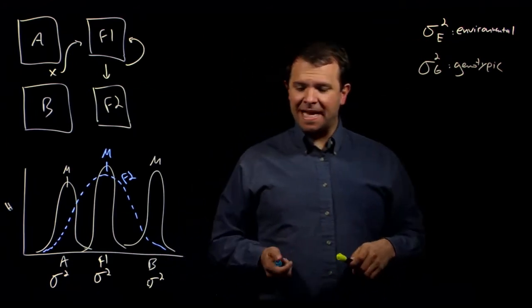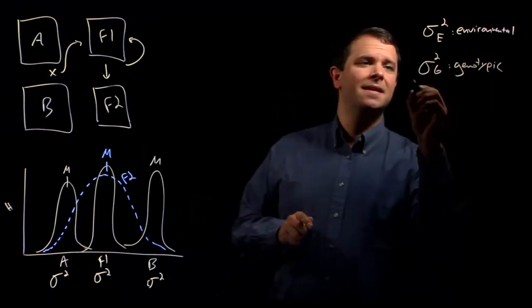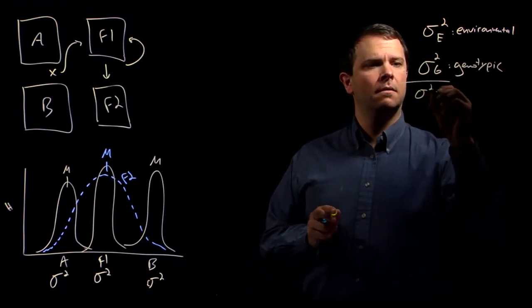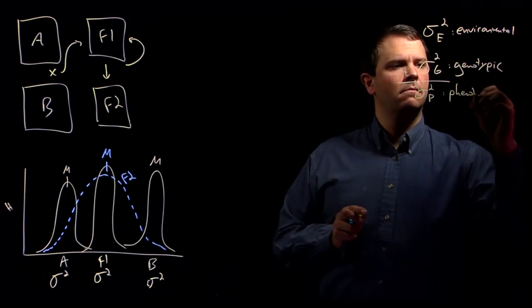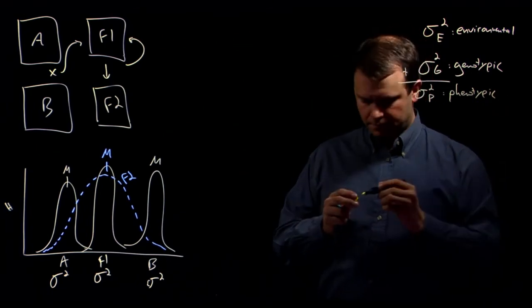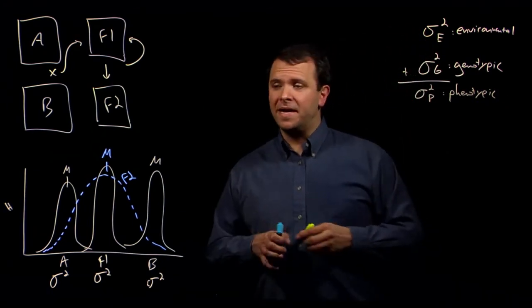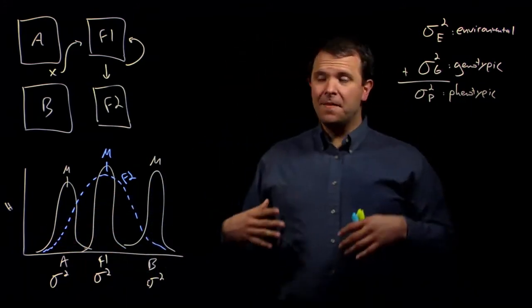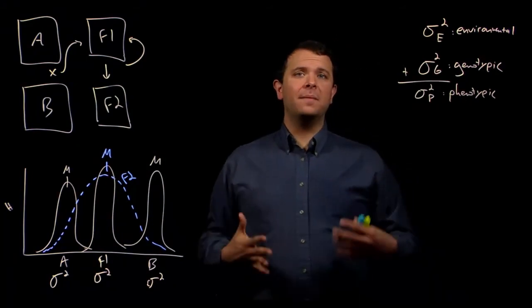And we say that the total phenotypic variance is the sum of those. And hopefully this is making some intuitive sense, that the variation, the variance of a distribution of individuals can come from different places.